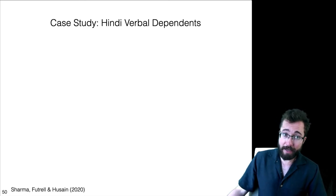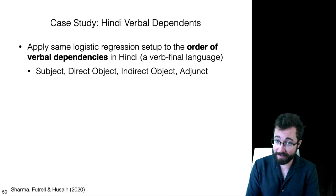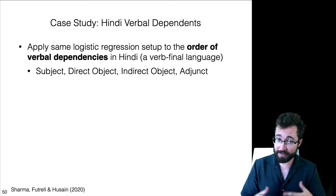A second case study now is the order of verbal dependence in Hindi. So, we're going to apply the same logistic regression setup to predict the relative order of subjects, direct objects, indirect objects, and adjuncts modifying verbs in Hindi. Hindi is verb final, so the verb is always the last thing.